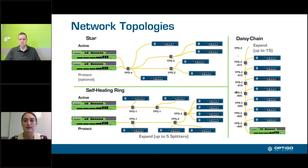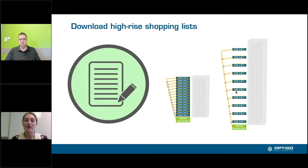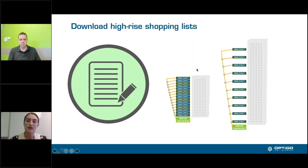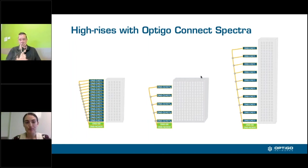The next document we recommend you download is our High-Rise Shopping List. This document was built specifically to help you design a high-rise and gives you all the different things you need. I highly recommend you download it now. It looks exactly like the image shown here — we have a high-rise and we're going to do a passive daisy chain.